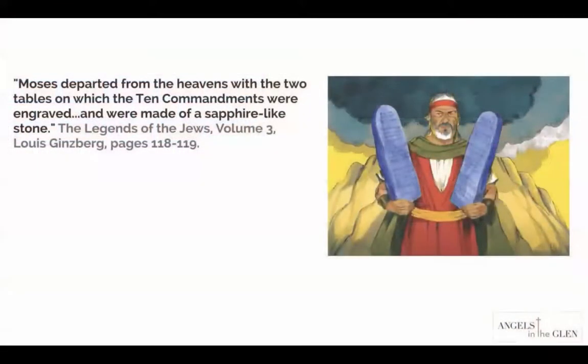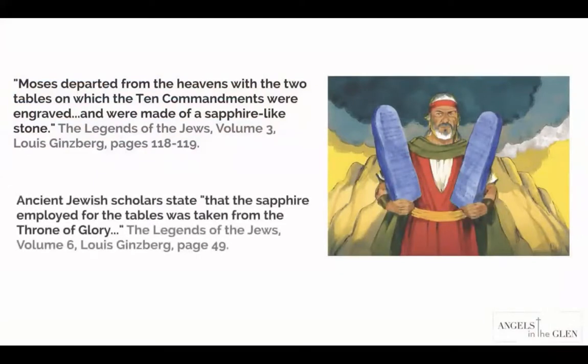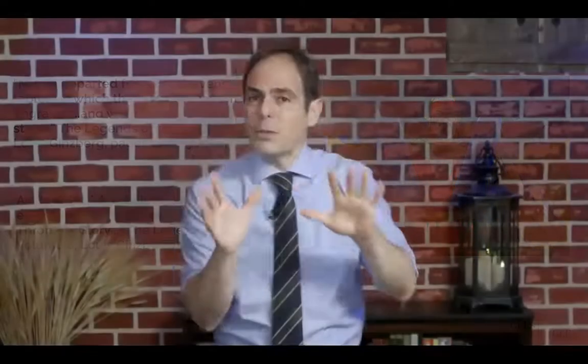I kept reading Ginsburg and found more. Back on page 49: 'Ancient Jewish scholars state that the sapphire employed for the tables was taken from the throne of glory.' The stone tablets came from God's throne. That's very interesting — hold on to that. Now let's see what the Bible says about God's throne, because I don't want to rely on legends — that was just a pointer.